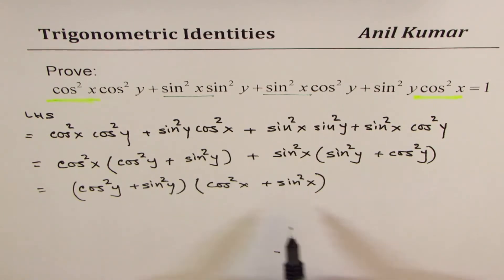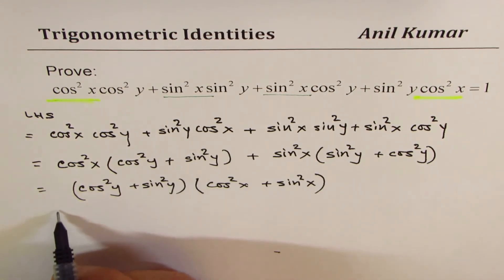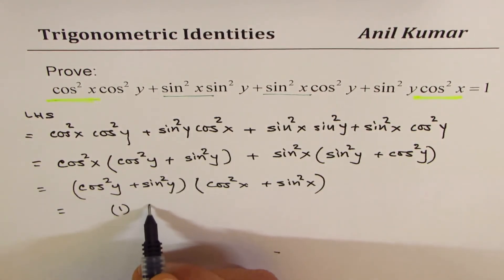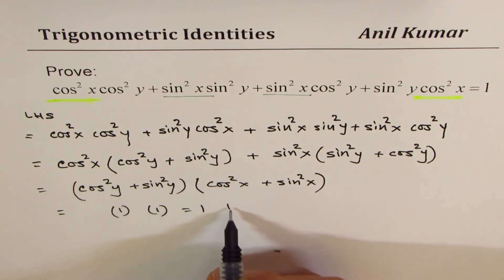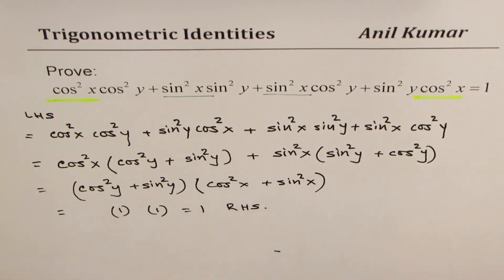Now, what are each of these terms? You know the Pythagorean identity. So it is 1 times 1, and that is 1, which is the right-hand side.